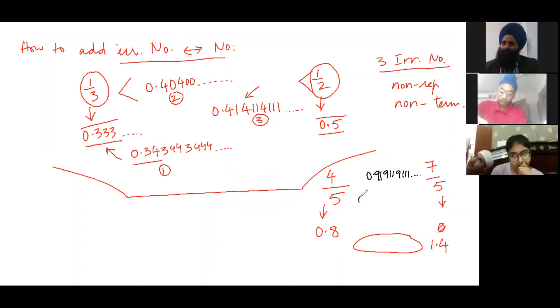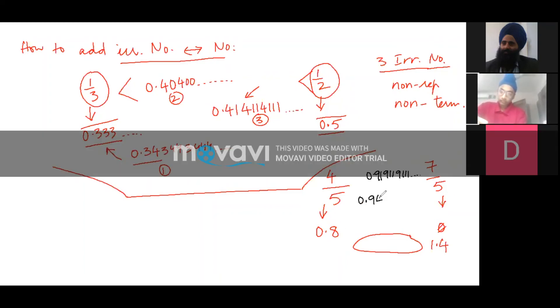Second number, maybe instead of 9, you can go still bigger. 0.94, double 4, and so on. This is the second irrational number.